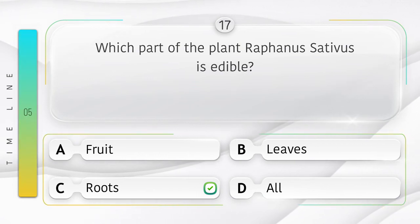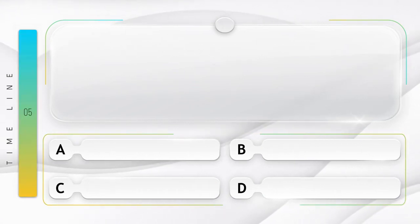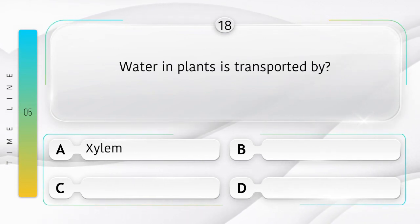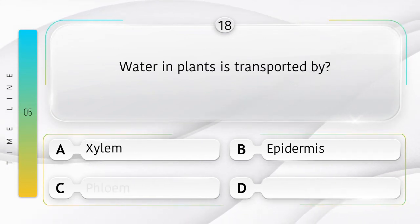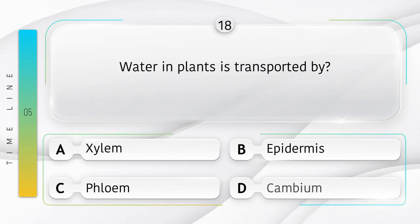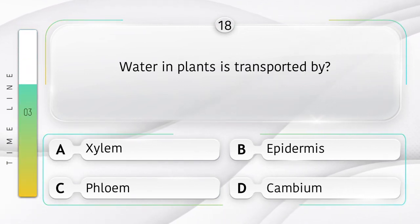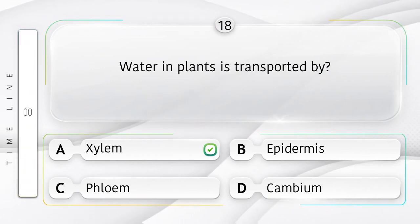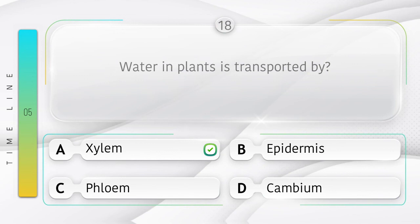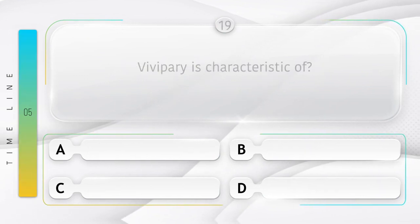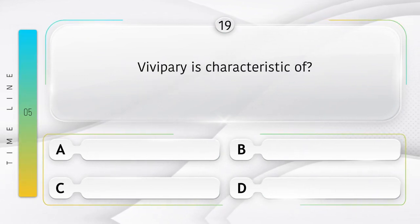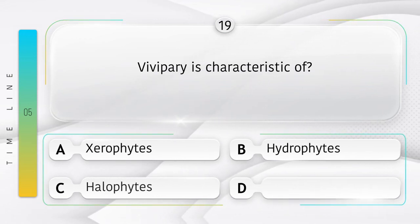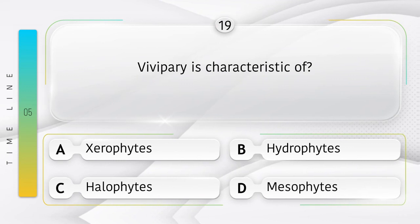The answer is option C, Roots. Water in plants is transported by — options: A) Xylem, B) Epidermis, C) Phloem, D) Cambium. The answer is option A, Xylem. Vivipary is a characteristic of — options: A) Xerophytes, B) Hydrophytes, C) Halophytes, D) Mesophytes.